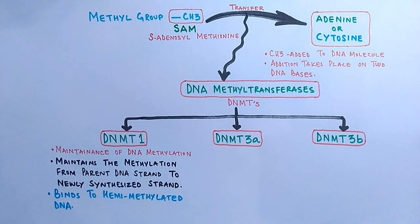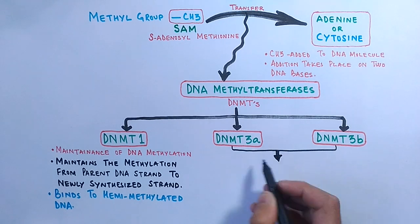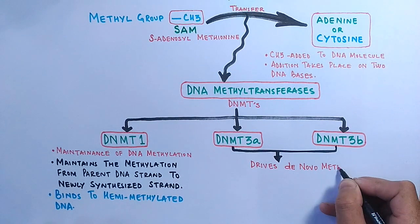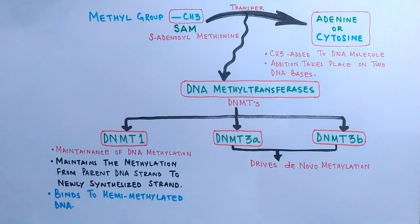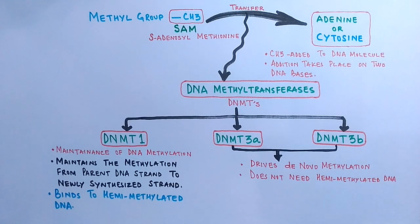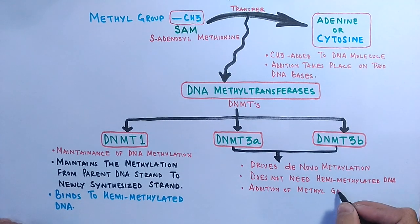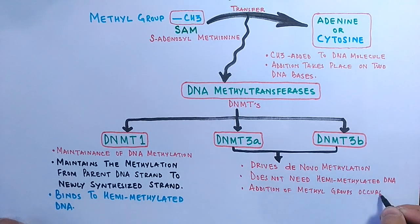DNMT3a and DNMT3b share the same function: de novo methylation. These enzymes do not need hemimethylated DNA to work, and the addition of methyl groups occurs at new positions.